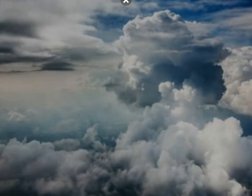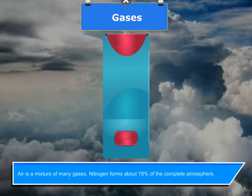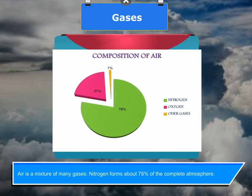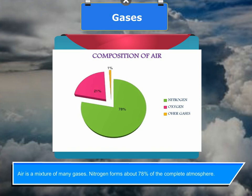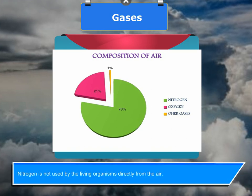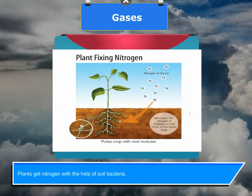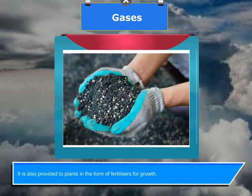Air is a mixture of many gases. Nitrogen forms about seventy-eight percent of the complete atmosphere. Nitrogen is not used by living organisms directly from the air. Plants get nitrogen with the help of soil bacteria, and it is also provided to plants in the form of fertilizers.